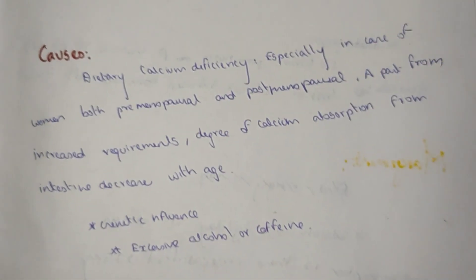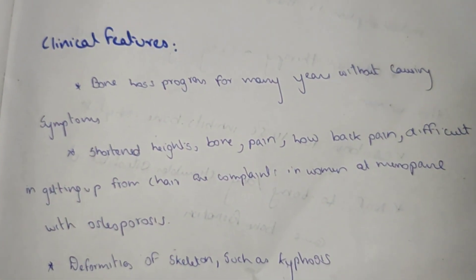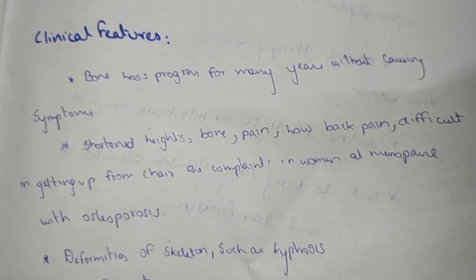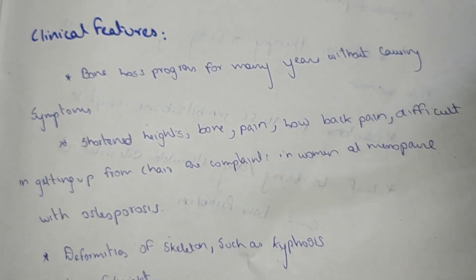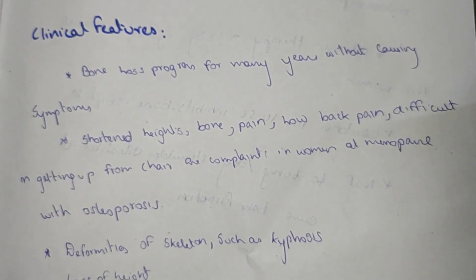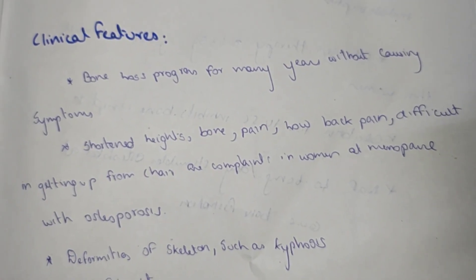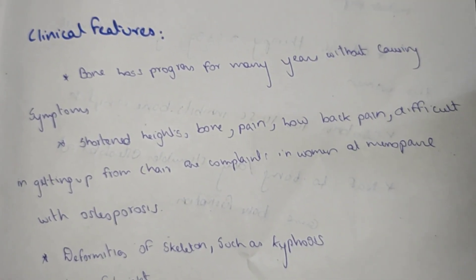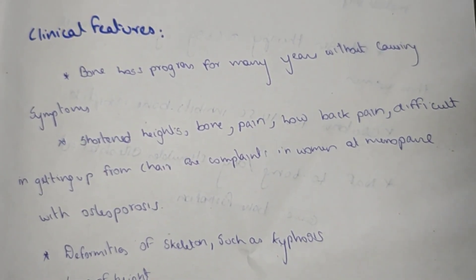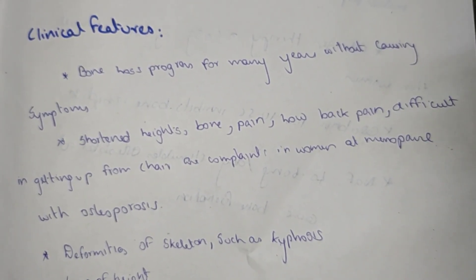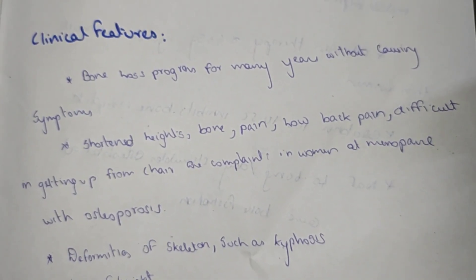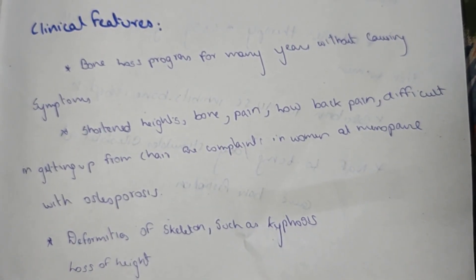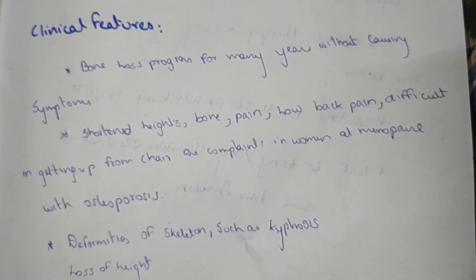The clinical features of osteoporosis: bone loss progresses for many years without causing symptoms. Then there is shortened height, bone pain, low back pain, and difficulty getting up from a chair — a major complaint for menopausal women. Deformities of the skeleton such as kyphosis and loss of height are also seen.